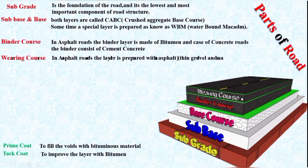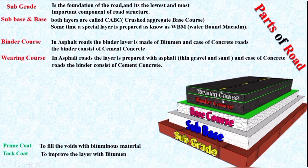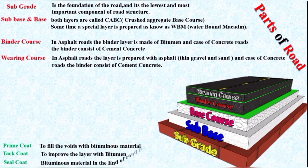In the case of an asphalt road, the wearing course layer is prepared with asphalt, which basically consists of thin gravel and sand. In the case of a concrete road, the binder consists of cement concrete. After the wearing course, a seal coat is provided of bituminous material to finish the road. The purpose of the seal coat is to avoid penetration of rainwater into the lower layers, so it is provided on the top surface.